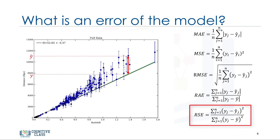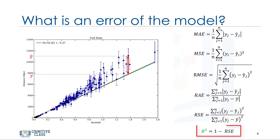Relative squared error is very similar to relative absolute error, but is widely adopted by the data science community as it is used for calculating R squared. R squared is not an error per se, but is a popular metric for the accuracy of your model. It represents how close the data values are to the fitted regression line. The higher the R squared, the better the model fits your data.